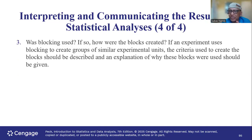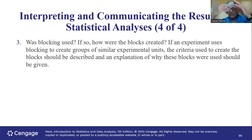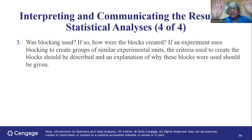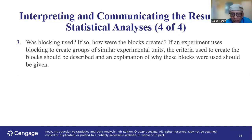When communicating the final results of our study to an audience interested in learning about this research, we should clearly mention what steps we have taken to reduce the sources of error. That is the whole idea — clearly communicating to our audience that we have taken steps to minimize error and that this is reflected in our results.